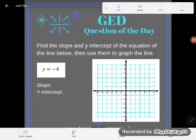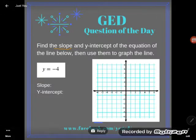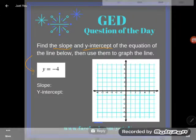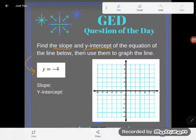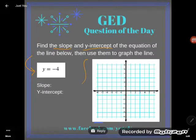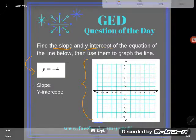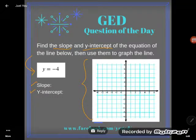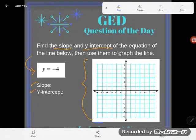Hey GED students, it's GED question of the day time. I've been asked to find the slope and y-intercept of the equation of the line below—there it is—and then use them to graph the line. So I'm going to get a slope, I'm going to get a y-intercept, and then once I know what they are, I'll use that information to draw my picture of the line on this graph here.